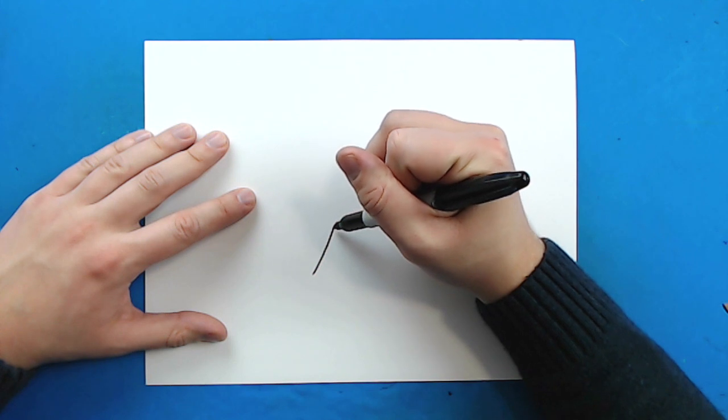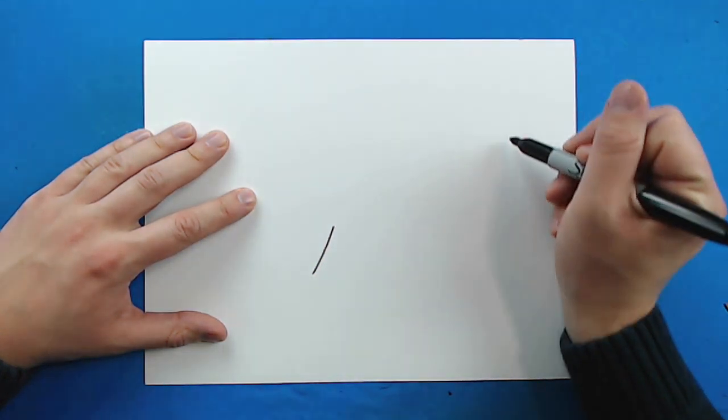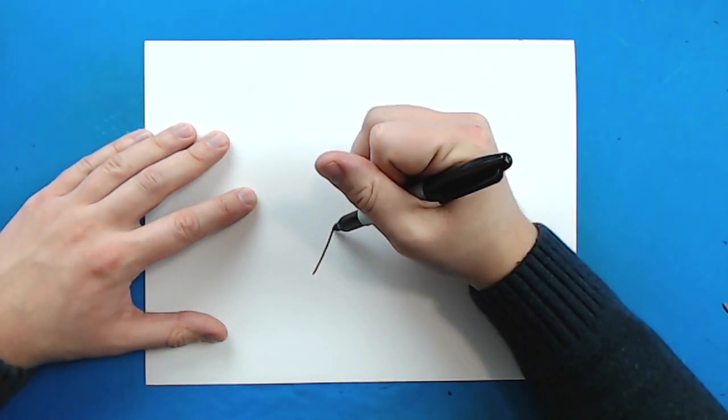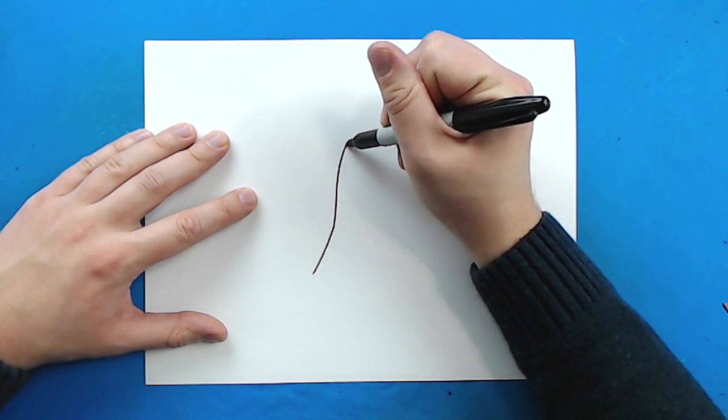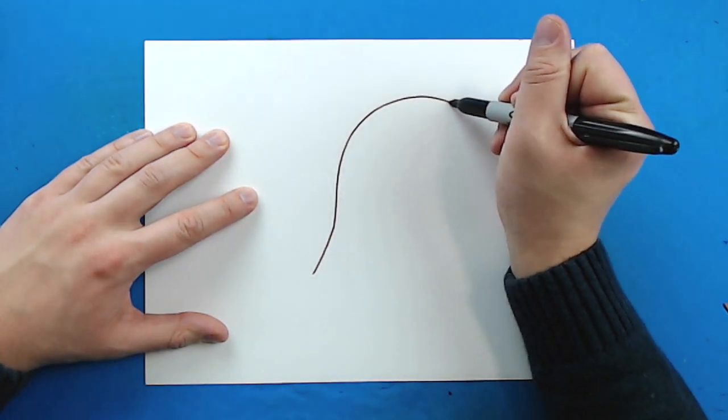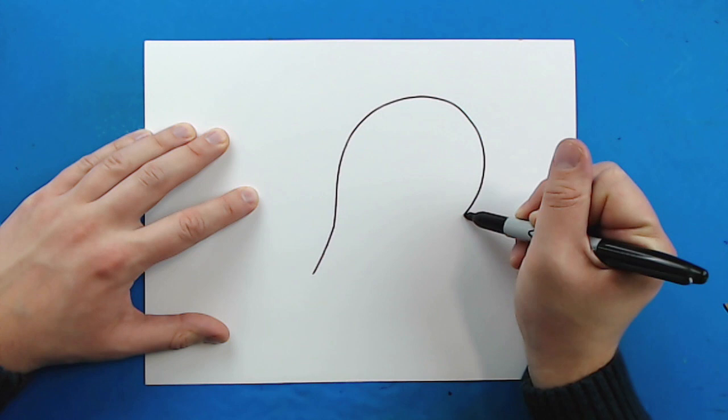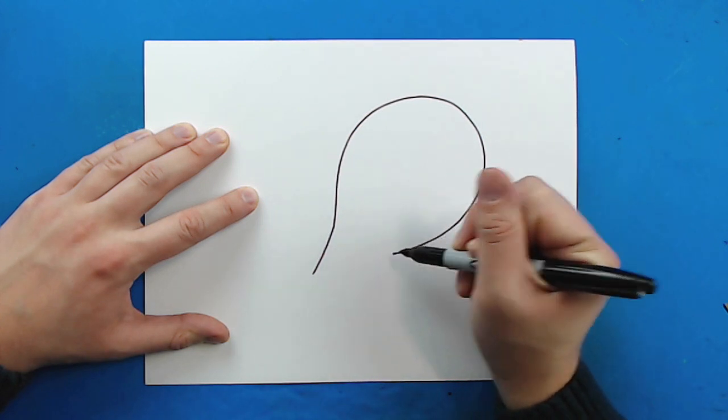Now starting right here, I'm going to draw a line that's going to kind of curve around here. So I'm going to draw a line that's going to go out, and then I'm going to curve around and make it nice and round and then come right back to here.